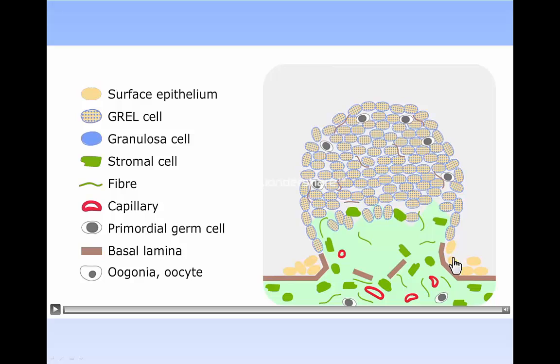This basal area is really mesonephros, and it has a proper surface epithelium with a sub-epithelial basal lamina separating the epithelium from underlying stroma. The remainder of the ovary is composed of germ cells and GREL cells, with no defined surface epithelium at this stage.